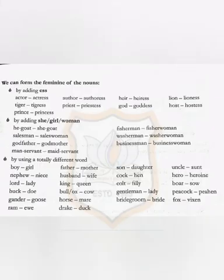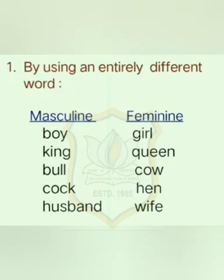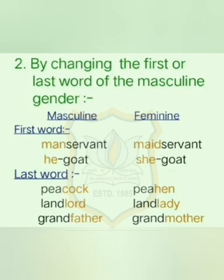Have a look at page number 7 in your textbook — the ways of formation of the feminine of nouns. Number 1: by using an entirely different word — masculine boy, feminine girl, and more examples. Number 2: by changing the first or last word — for example, man servant: if we change 'man' to 'maid', it becomes maid servant. Man servant is masculine and maid servant is feminine.